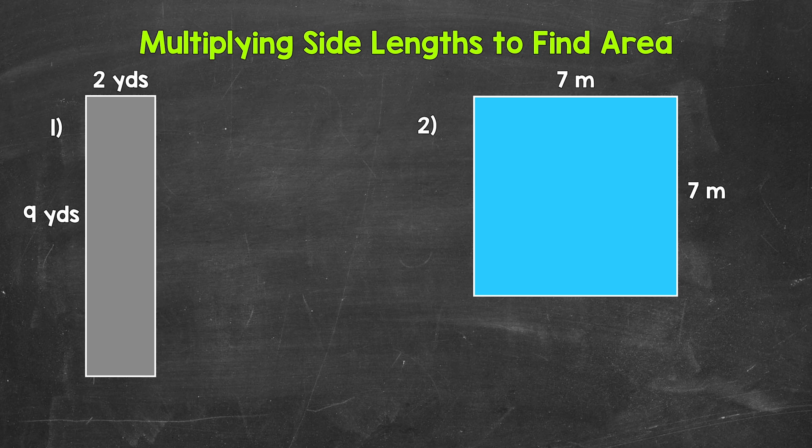Let's jump into number one, where we have a rectangle with side lengths of nine yards and two yards. When we find the area of a rectangle, we can multiply side lengths. Multiply one of the side lengths by one of the other side lengths. So for number one, we have nine yards and two yards. So we can do nine yards times two yards. Nine times two gives us 18.